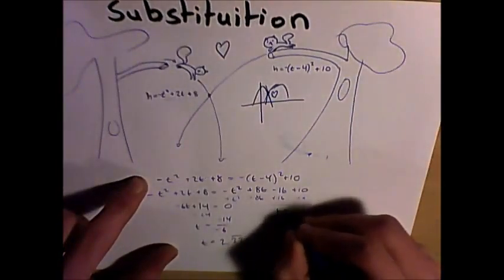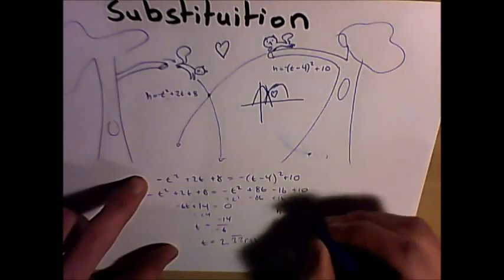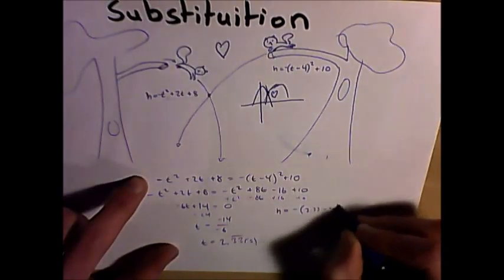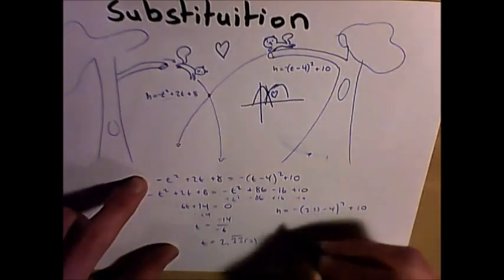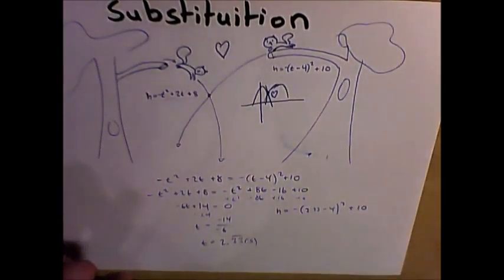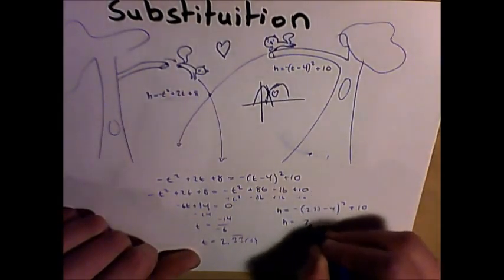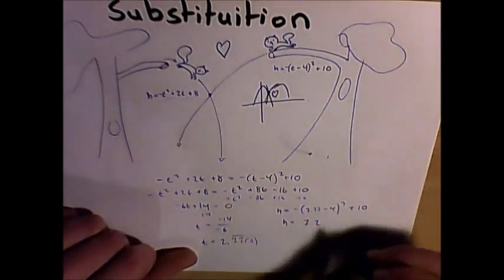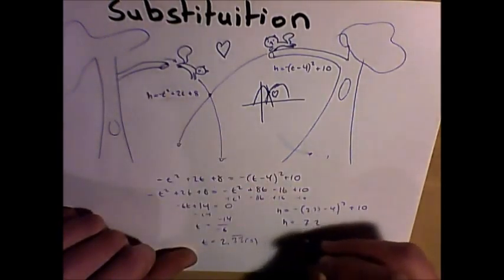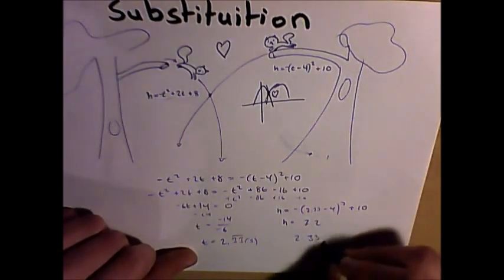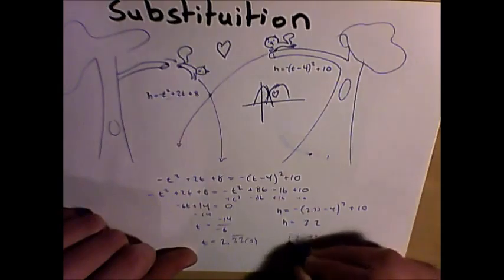So here we have h equals negative 1 times 2.33 minus 4 squared plus 10. And that's how we solve for h. So we'll simply solve this and find h. And we find that our h value is equal to 7.2. So we know that these two squirrels will collide after 2.33 seconds and 7.2 meters.